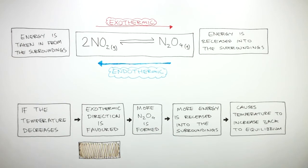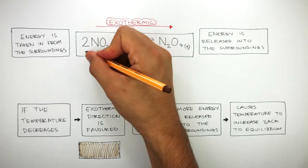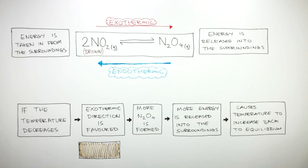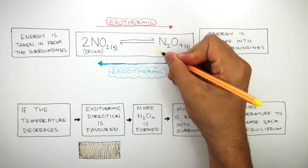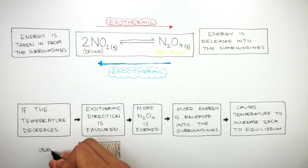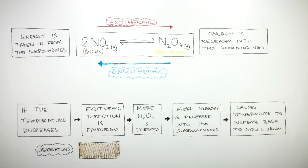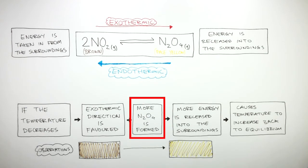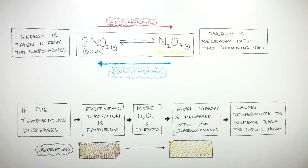When we look at this reacting mixture, we know that NO2 is brown and N2O4 is pale yellow. The observation is that the reacting mixture becomes more pale yellow as more N2O4 is formed, as the exothermic direction is favoured due to the decrease in temperature.